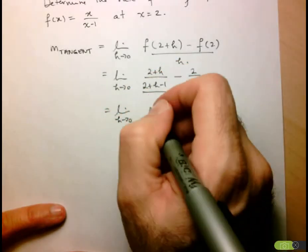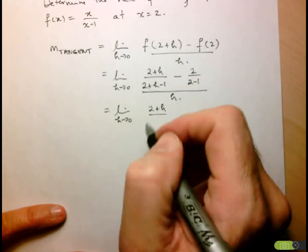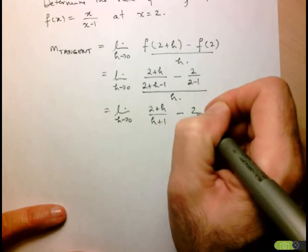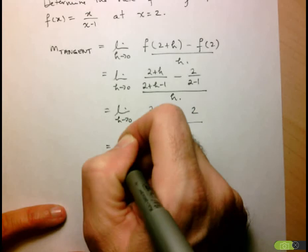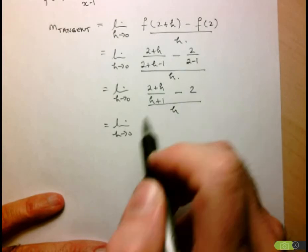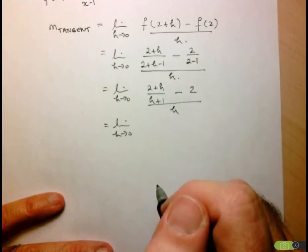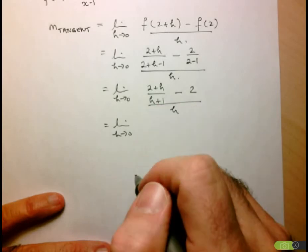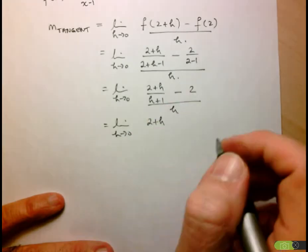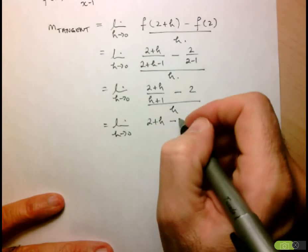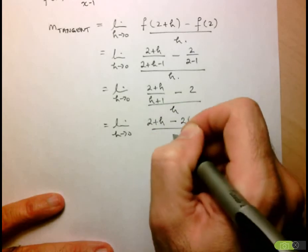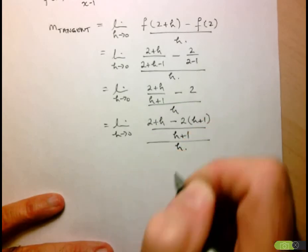We have 2 plus h, and here 2 minus 1 is 1, so we have h plus 1 minus 2 over 1 is equal to 2. Let's keep going. Here we have the difference of rational expressions, so I need to find a common denominator, which will be h plus 1. So here we have 2 plus h, since that is already in the denominator nothing changes, but here I'll have to multiply 2 by the expression h plus 1. That'll all be over h plus 1 and then over h.